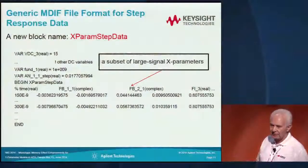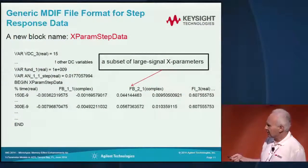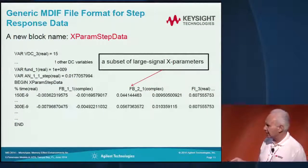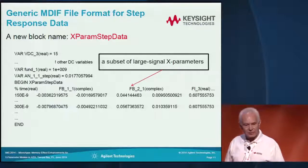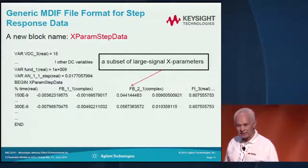The data captured is put into a generic MD file format with a new block name: X parameter step data. It has very similar or almost identical input independent variables.